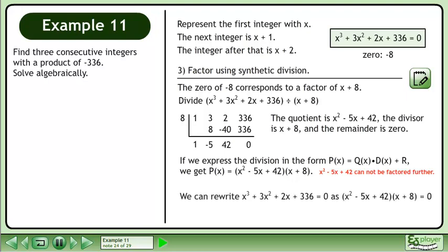We can rewrite x³ + 3x² + 2x + 336 = 0 as (x² - 5x + 42)(x + 8) = 0.